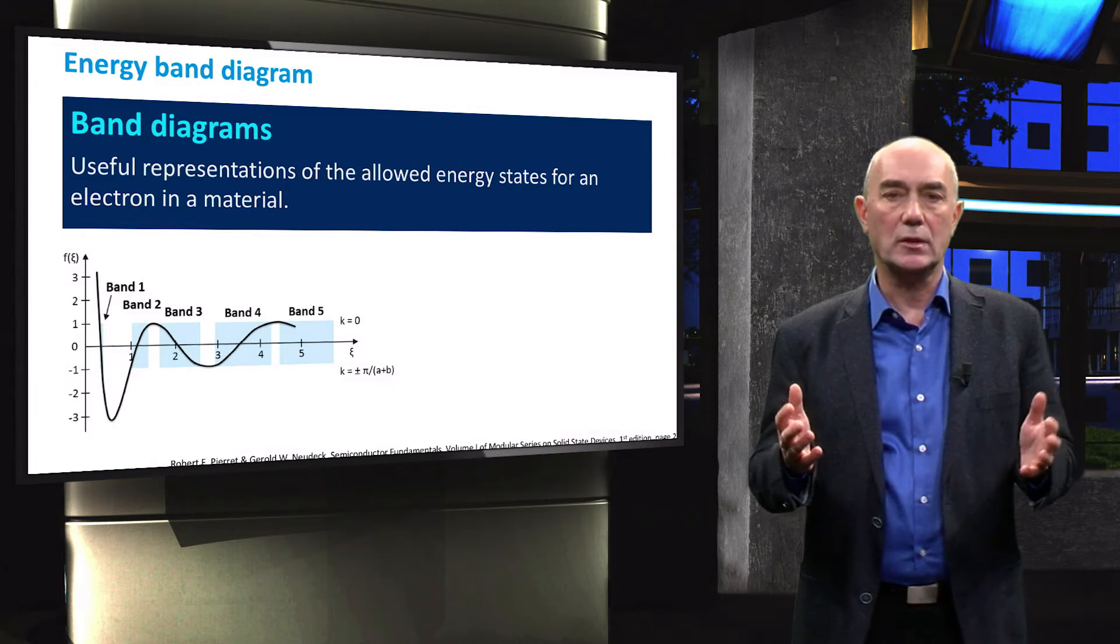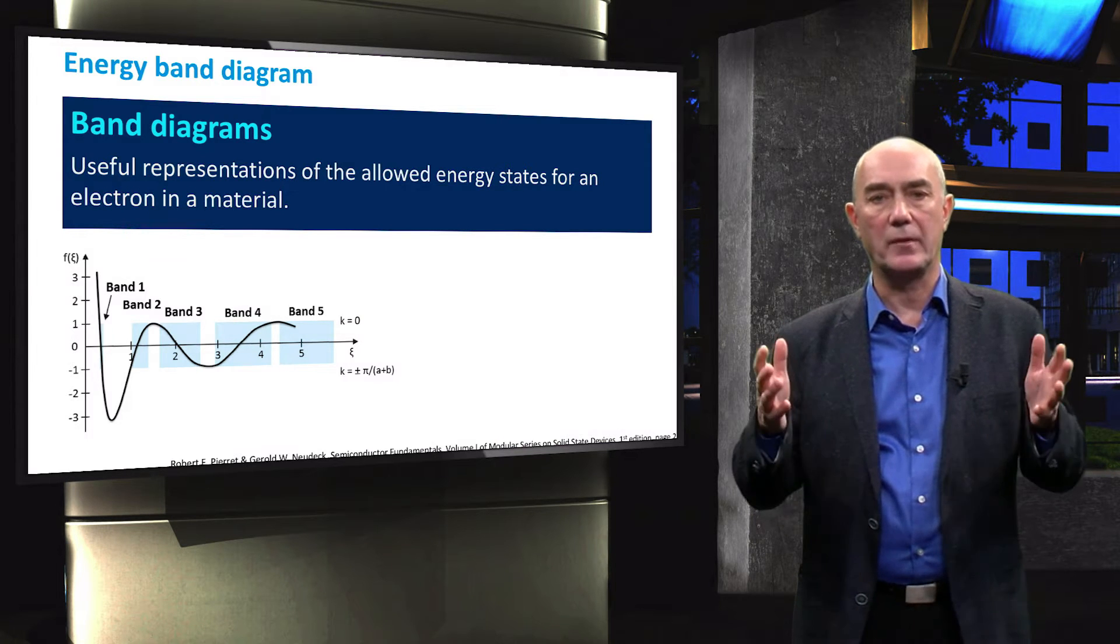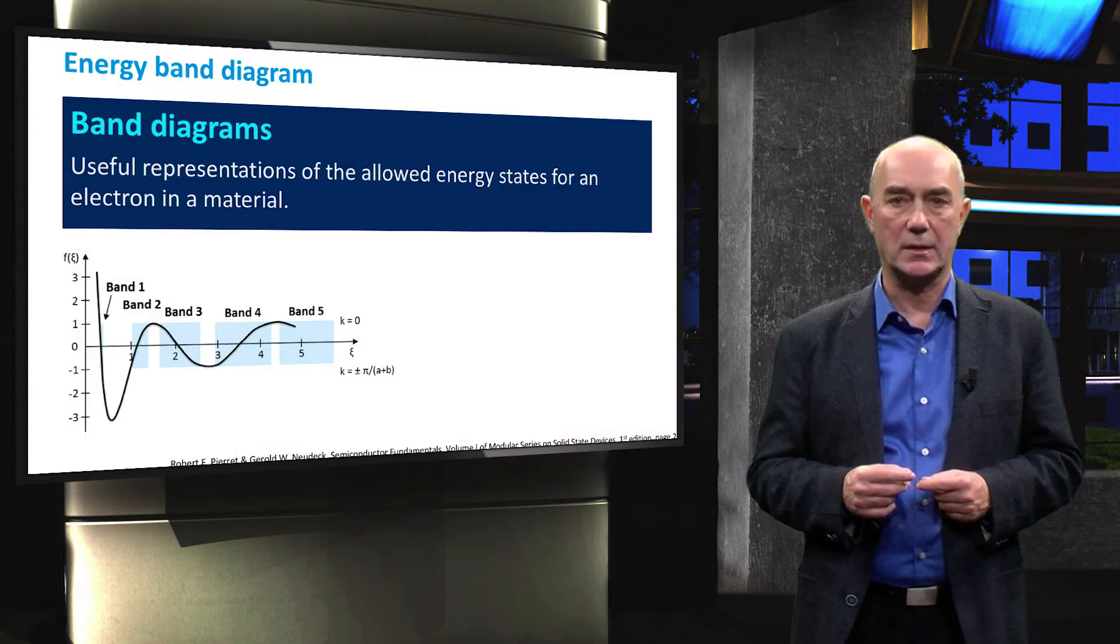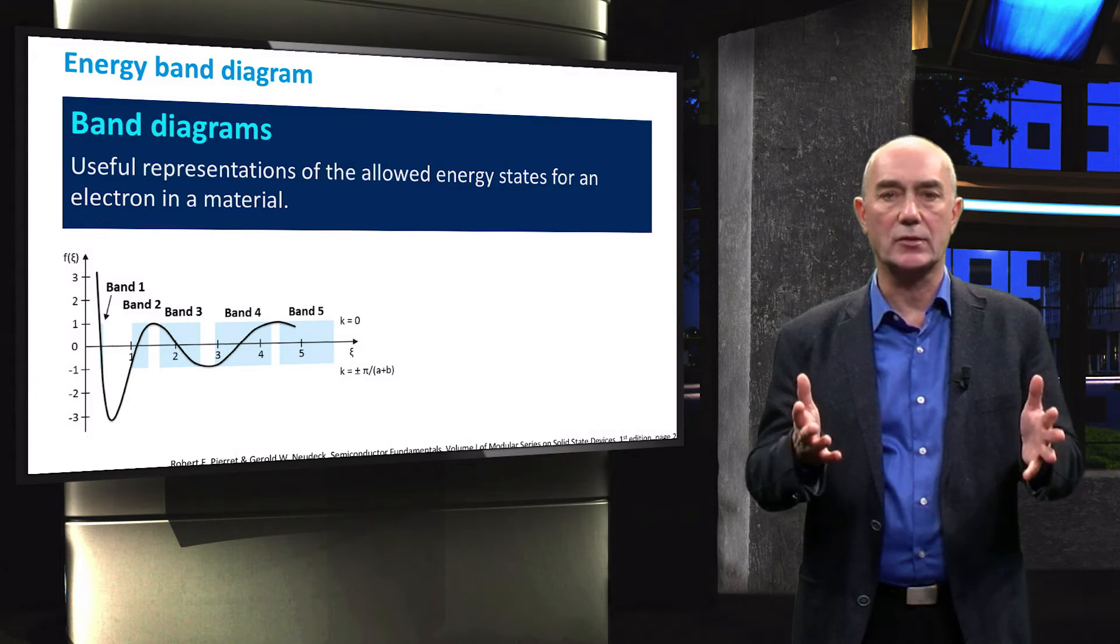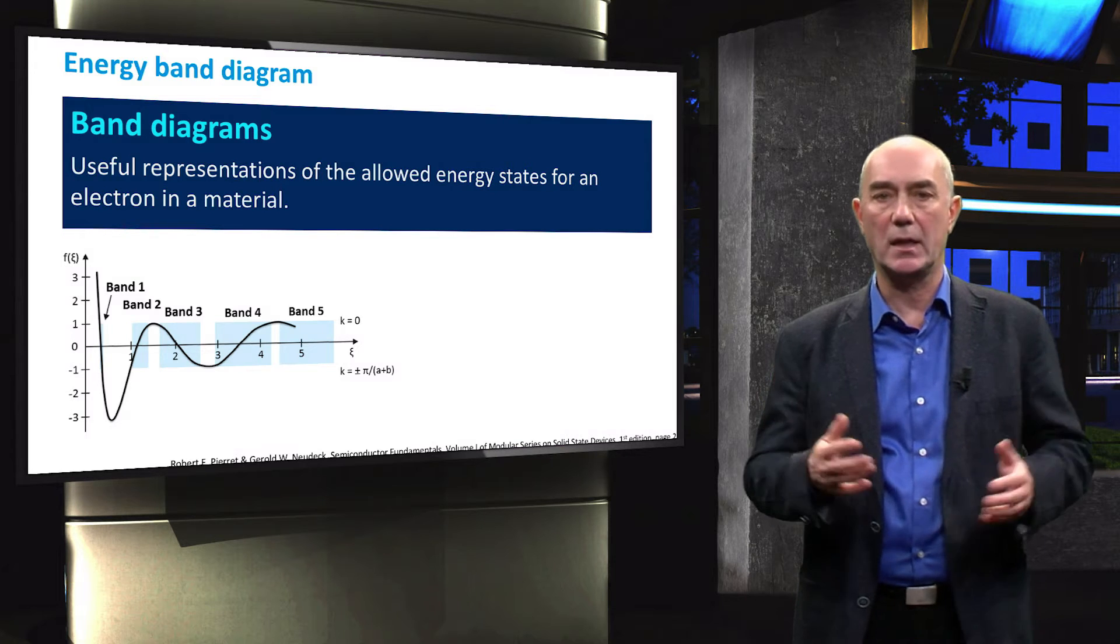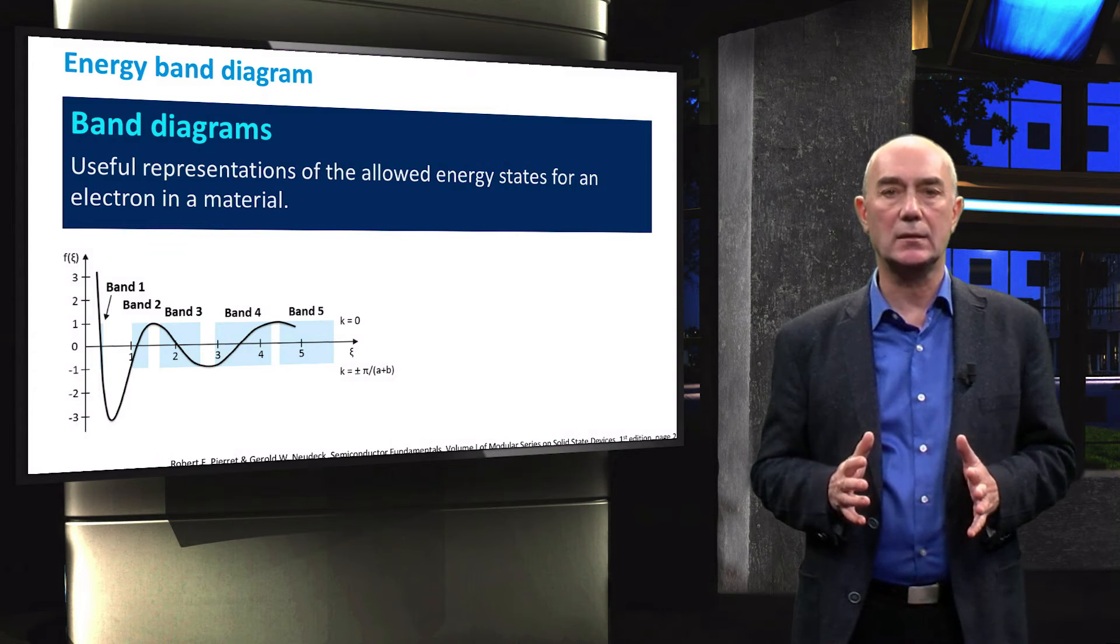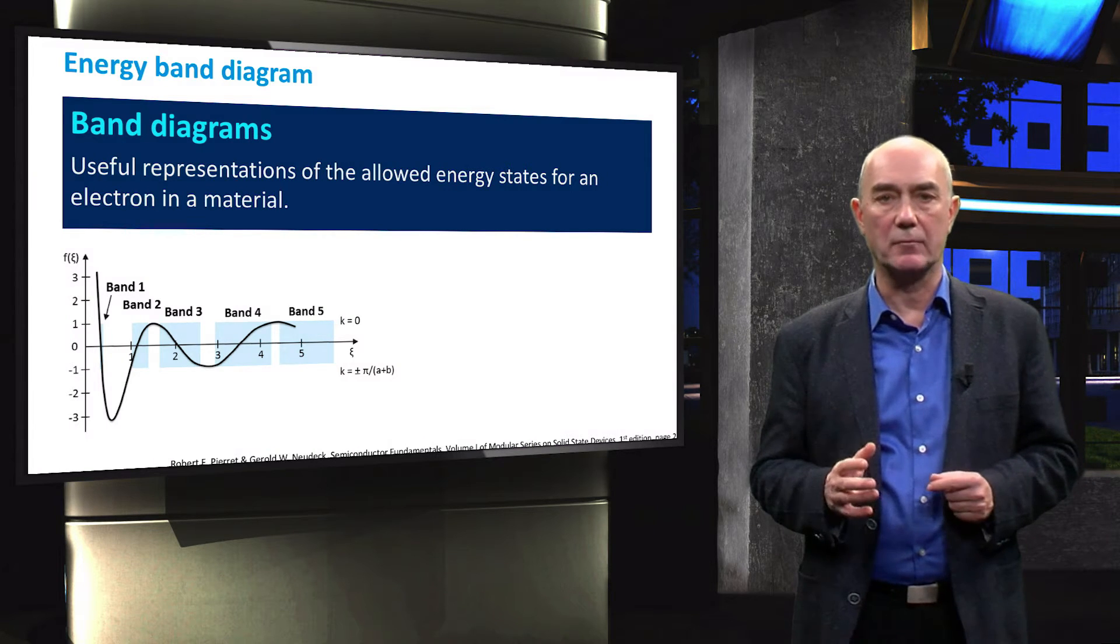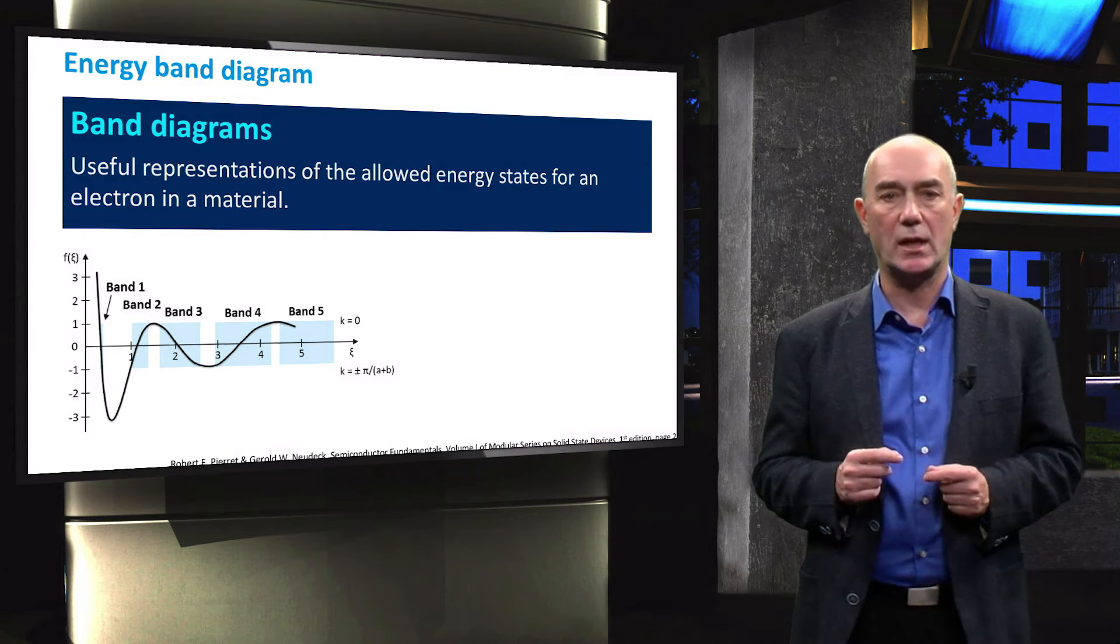In order to describe the properties of a semiconductor, we make use of energy band diagrams. They are useful representations of the allowed energy states for electrons in a material. We will use them to describe the main properties of silicon and all the properties involving transport, generation and recombination of the charge carriers.